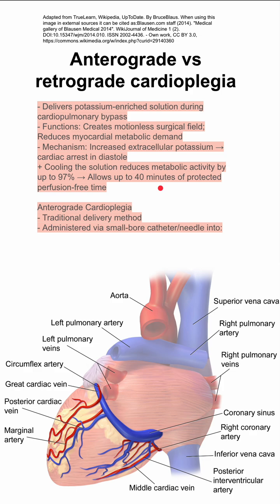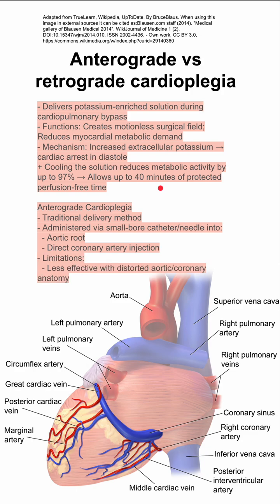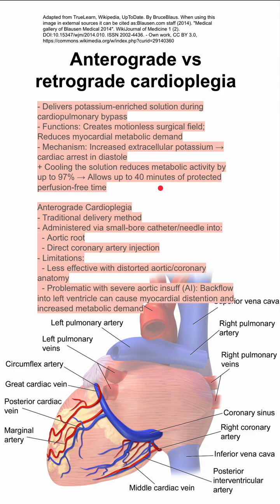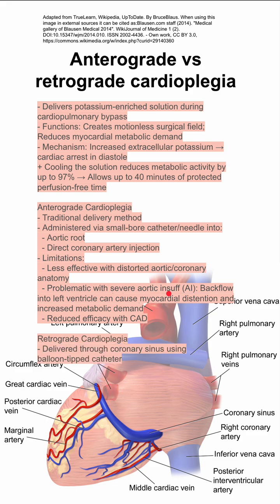Anterograde cardioplegia is the traditional method of delivering cardioplegia. It's administered via a small-bore catheter or needle into the aortic root or directly into the coronary arteries. The limitations are that it's less effective with distorted aortic or coronary anatomy, specifically with severe aortic insufficiency, where you'll have backflow into the left ventricle, which can cause myocardial distention and increased metabolic demand. You also have reduced efficiency with coronary artery disease — if your vessels are too obstructed or stenotic, you won't be able to get cardioplegia through in the anterograde fashion.